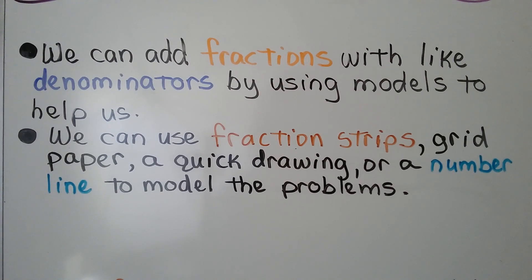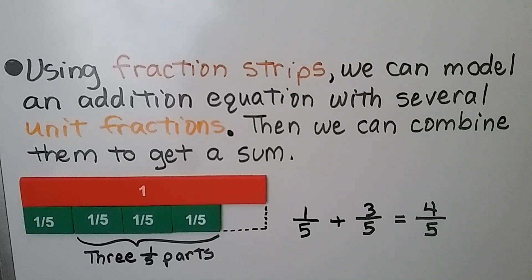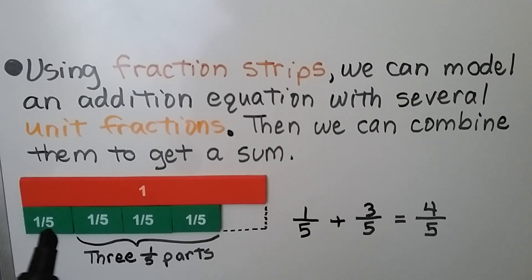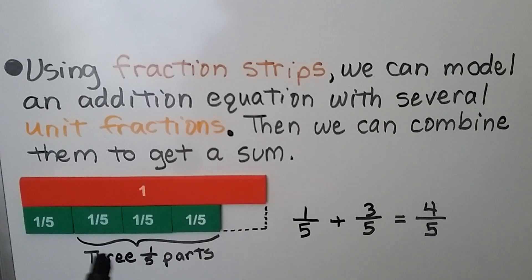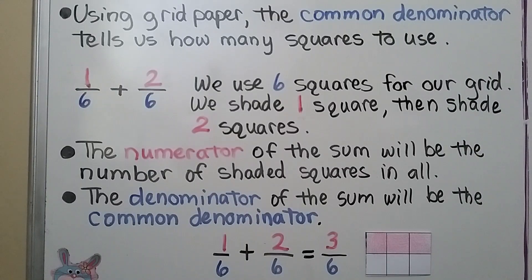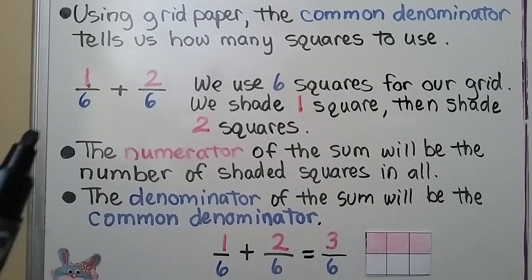Using fraction strips, we can model an addition equation with several unit fractions, then combine them to get a sum. If we have one-fifth plus three-fifths, we can put a one-fifth fraction strip and three one-fifth fraction strips for three-fifths. We get four-fifths.